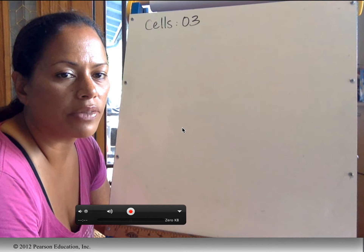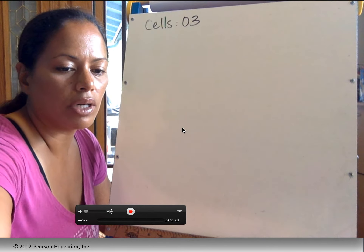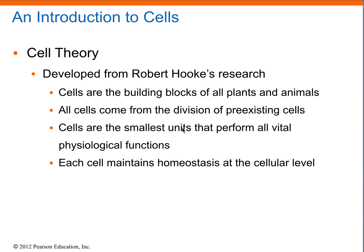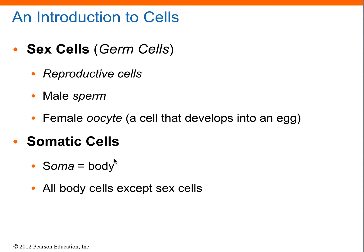What are the basic units of all living things? They are the cell. So, cell theory. Basically, they are the building blocks of all living things. All animals come from pre-existing cells. They're the smallest units that perform all vital functions. They maintain homeostasis.